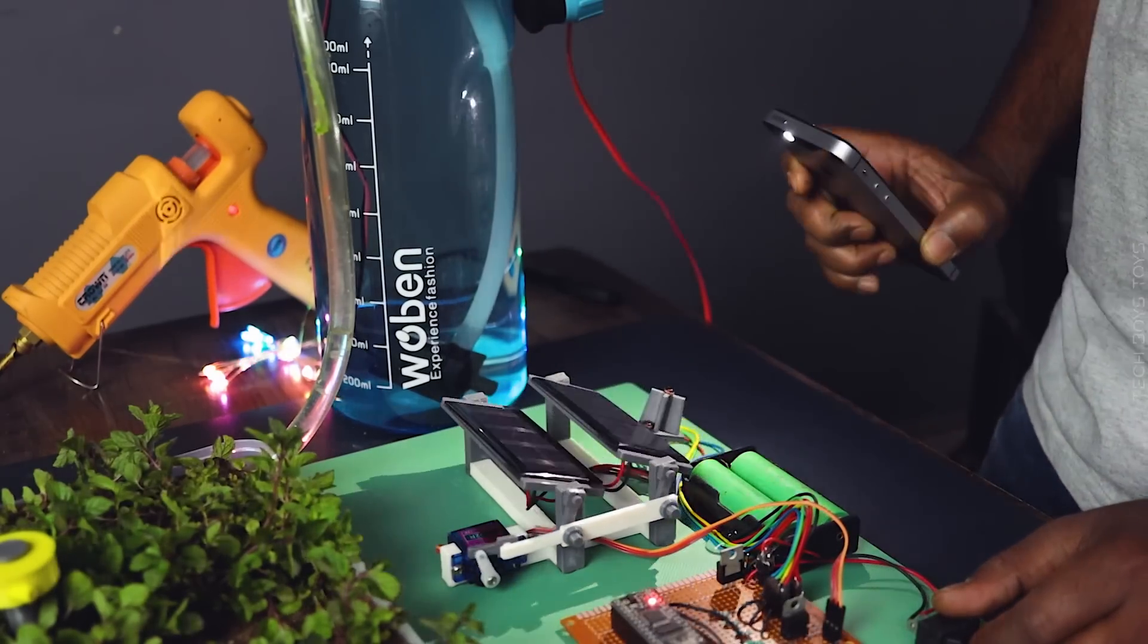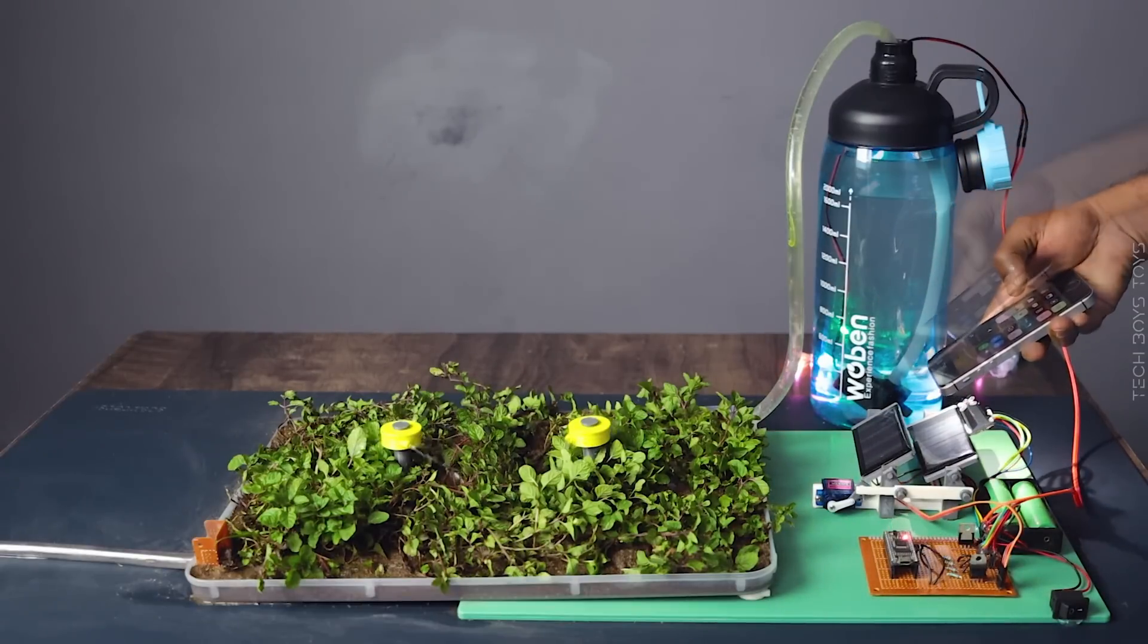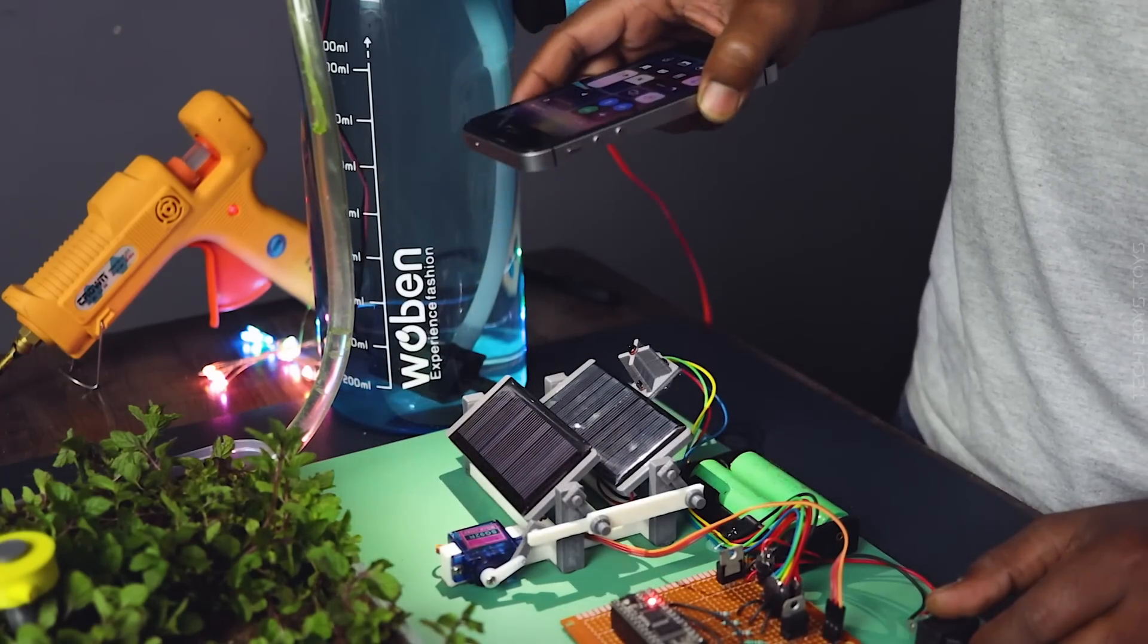When the sun rises in the morning, LDR detects the rays and moves towards the sun and turns on the water pump. At the evening, it will turn off the pump and go back to the home position.